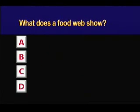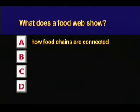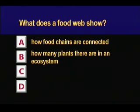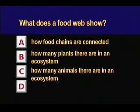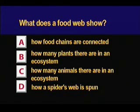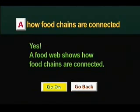What does a food web show? A) how food chains are connected, B) how many plants there are in an ecosystem, C) how many animals there are in an ecosystem, or D) how a spider's web is spun. Yes, a food web shows how food chains are connected.